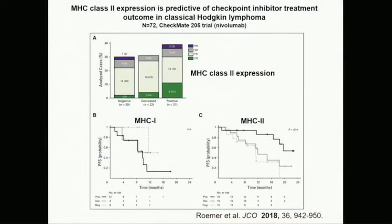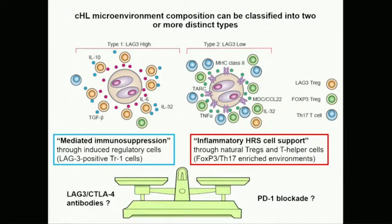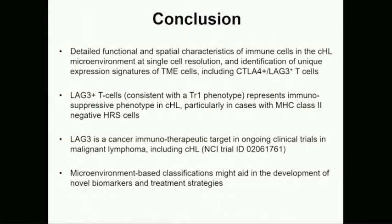Regarding drug targets: in the inflammatory microenvironment we have PD-1-positive T-cells; in the immunosuppressive microenvironment we have CTLA-4 and LAG3 — for which we have matching antibodies — versus nivolumab/pembrolizumab on the other side. This can be the start of a microenvironment-based nomenclature suggesting which immunotherapies might work best. This theory is nicely validated by work from the SHIP group at Dana-Farber, where MHC class II absence or presence predicts response to nivolumab.